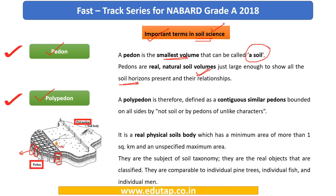When we take this particular unit we call it a pedon, and we can see the layers in it. Moving on to polypedon — this is what you get when you arrange all these pedons in a contiguous manner. They need to have similar characteristics to be called a polypedon. The definition: polypedon is contiguous, similar pedons that are bounded on all sides by non-soil or by pedons of unlike character.